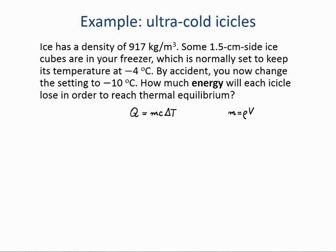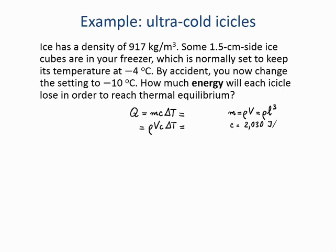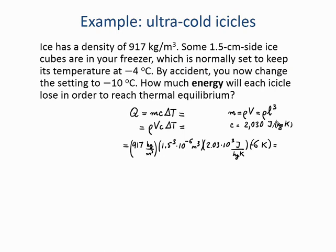We are given the volume because we know the shape is a cube with a given side, so the volume is just the side cubed. Using this expression for the mass — density times volume — times specific heat capacity times temperature change: the specific heat capacity of ice is 2030 joules per kilogram per Kelvin, and the density is given. The temperature change is negative 6 Kelvin, meaning energy will be lost, so we should find a negative value: negative 37.7 joules.